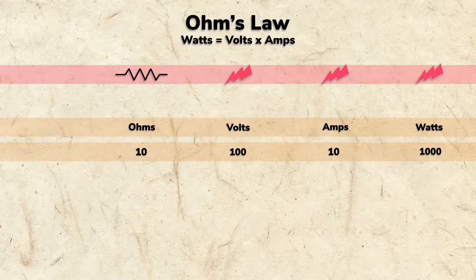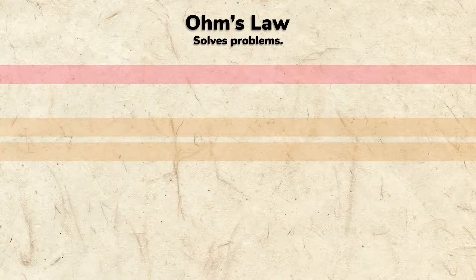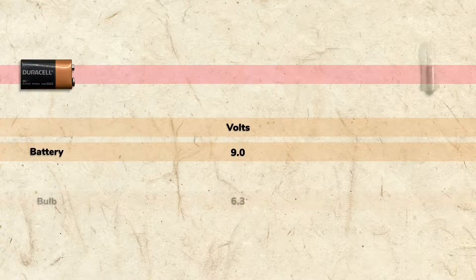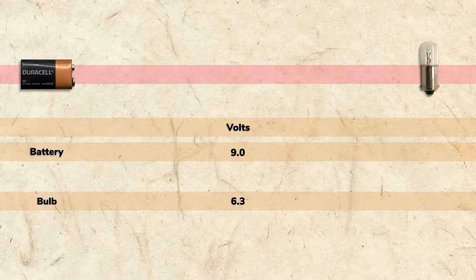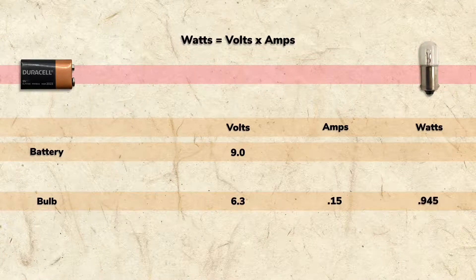To see how useful this can be, let's solve an electrical problem. This battery provides 9 volts. This bulb requires 6.3 volts at 0.15 amps, making it a 0.945 watt bulb.